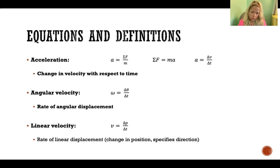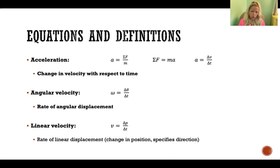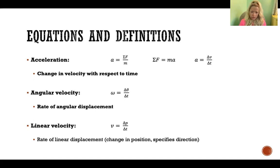Angular velocity is the rate of angular displacement — so how fast is that angular displacement happening? And linear velocity is the change in position, or the rate of linear displacement — the change in position over the change in time.